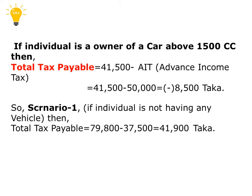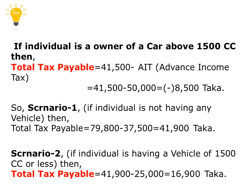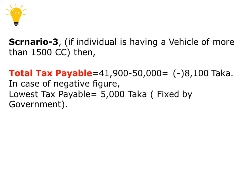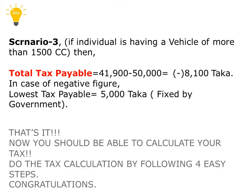From our example, there are three scenarios. In the first scenario, the individual with a salary of 71,200 Taka has a total tax payable of 41,900 Taka if he doesn't have a vehicle. But if this individual has a vehicle of 1500cc or less, total tax payable will be 41,900 minus 25,000 equals 16,900 Taka. In scenario 3, if the individual owns a vehicle above 1500cc, total tax payable will be 41,900 minus 50,000 — a negative figure — and in that case the minimum payable tax is 5,000 Taka, as fixed by the government.